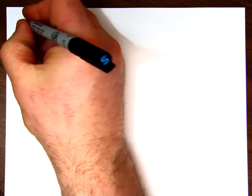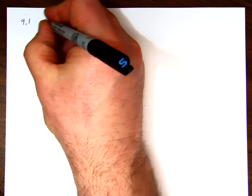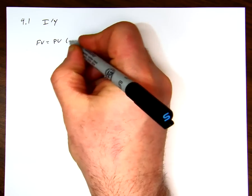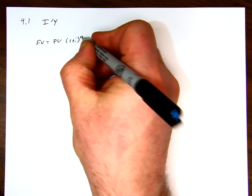We're going to take a look at section 9.1, which is periodic interest rate. And our calculator is i per y. So we knew from before that our future value is equal to our present value, 1 plus i to the n. So now what we're doing is we're solving for i.